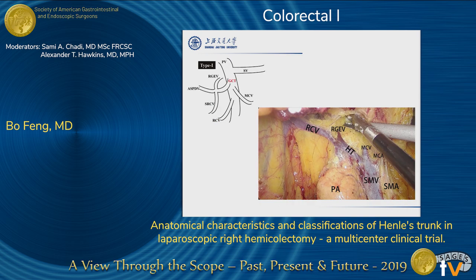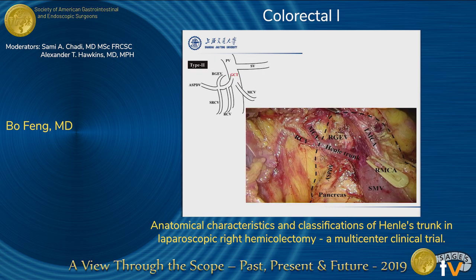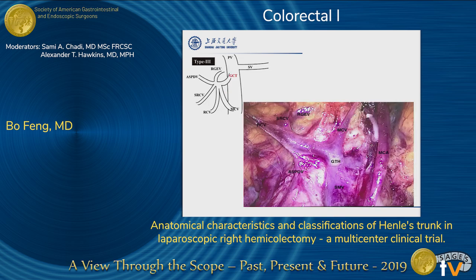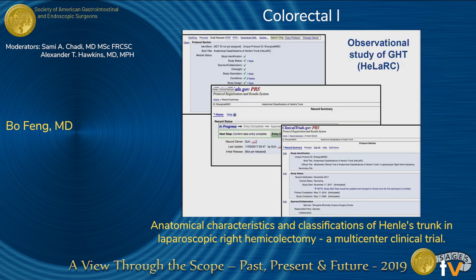Type 1 represents only one vessel from the colon. Type 2 represents two veins from the colon. Type 3 represents three. We are trying to assess whether these categories have certain meaning in our populations, especially in Chinese populations.